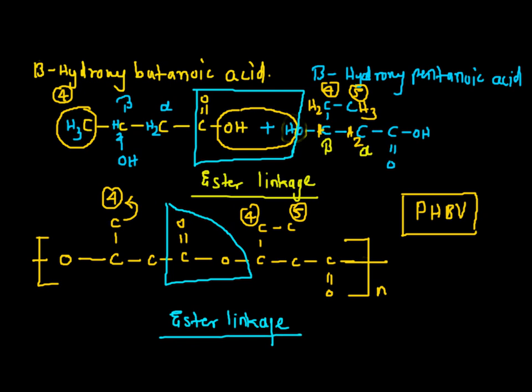In this type of polymer, the first part that is beta-hydroxy-butyanoic acid provides stiffness to the polymer, and the pentanoic acid provides the flexibility.